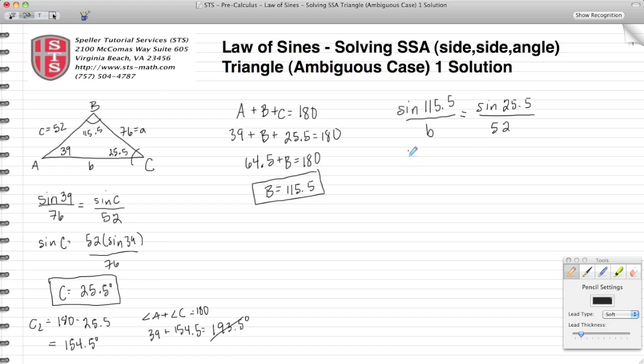When I cross multiply, I get B times the sine of 25.5 equals the sine of 115.5 times 52. Isolate B by dividing sine of 25.5 on both sides.